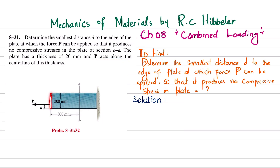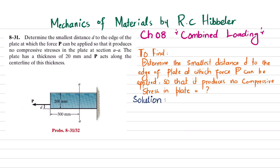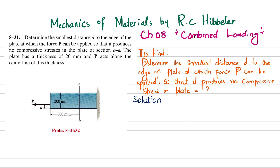You can see this is the plate — this is the frontal view and the side view. The thickness is 20 millimeters and the height is 200 millimeters, and P acts along the centerline of this plate. What we have to find is this distance d from the base so that the applied force P produces no compressive stress in the plate.